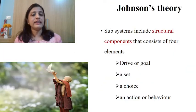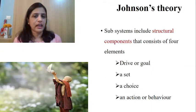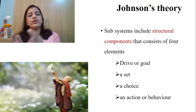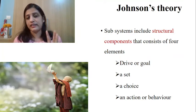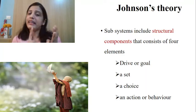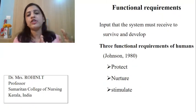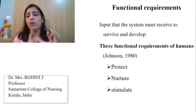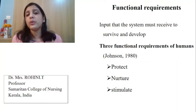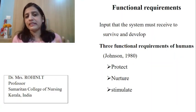Each subsystem has a structure and a functional requirement. In structural requirement, Johnson said there are four things: drive, set, choice, and action or behavior. Functional requirement has three components: number one, to protect an organism from noxious stimuli; number two, every behavioral system has a need to nurture it, to help it grow; and number three, to stimulate. This was explained in detail in the previous video.